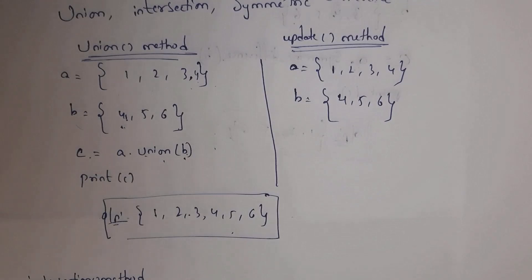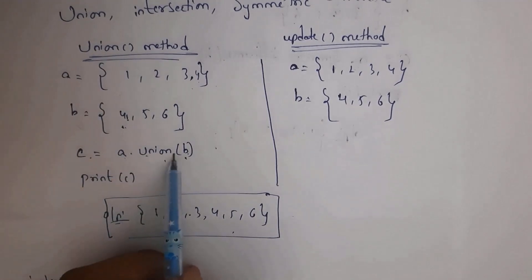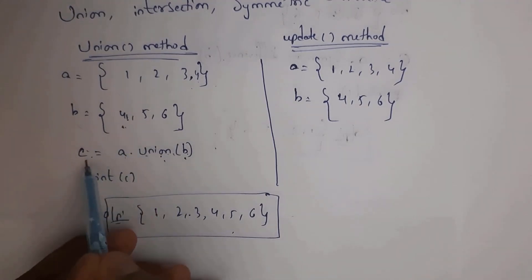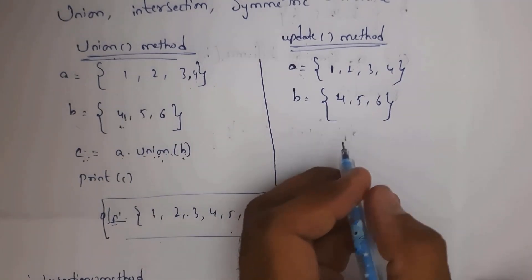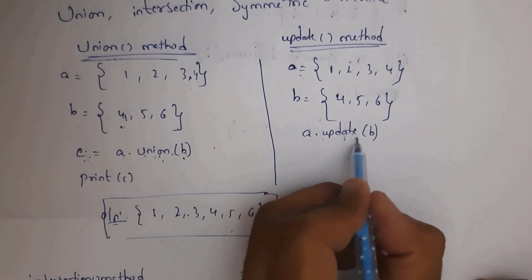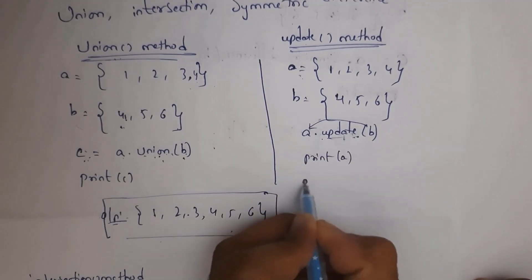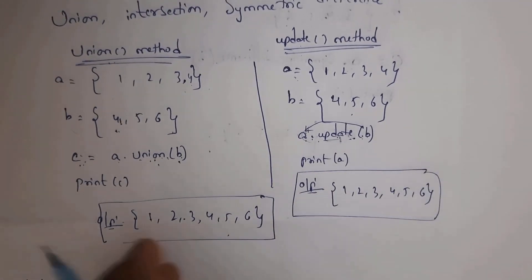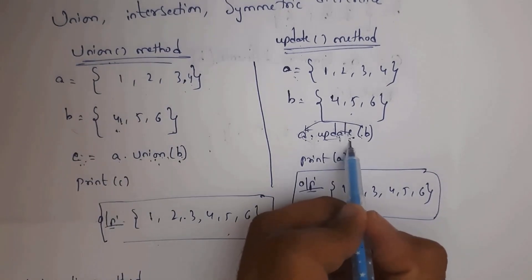Next I will explain the update method. The update method is similar to union, but with a difference: the union method stores the result in a separate variable c, whereas the update method stores the result in variable a itself. Just write a.update(b) — it performs union and stores the result in a. Whenever you write print(a), you will get output 1, 2, 3, 4, 5, 6.